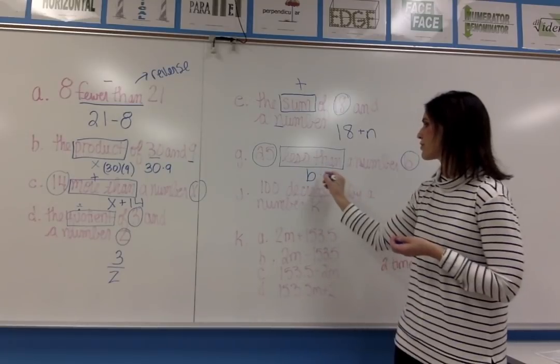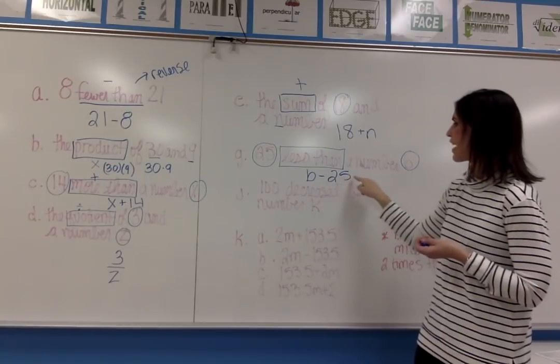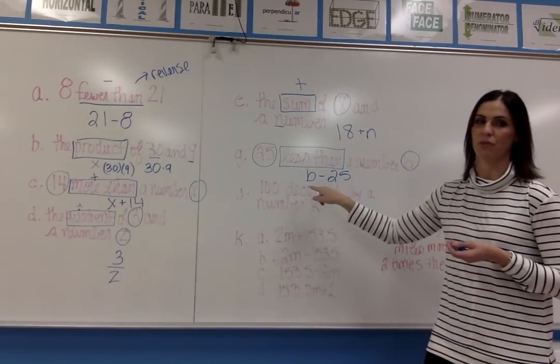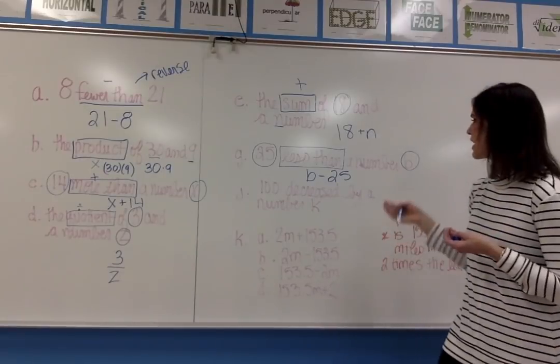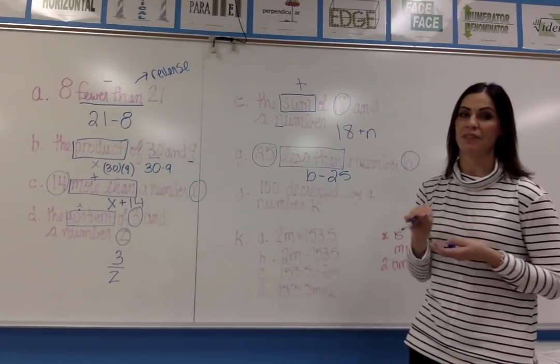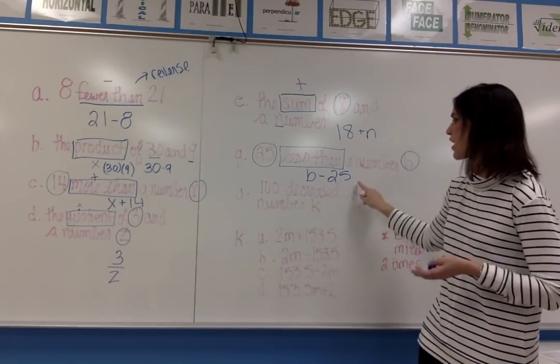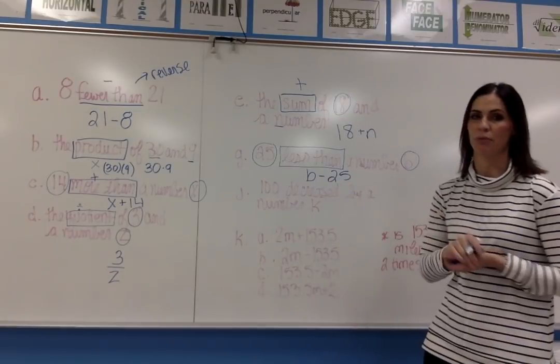So 25 less than what you started with—you have to visualize what this means. If I'm starting with something of B, maybe it's 30 pieces of candy, and I have 25 less than that number, I am subtracting 25 from the number I started with.